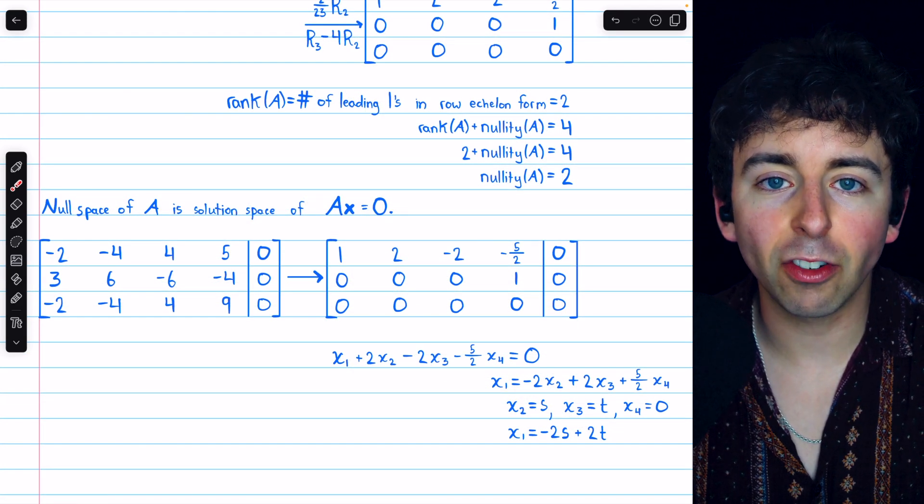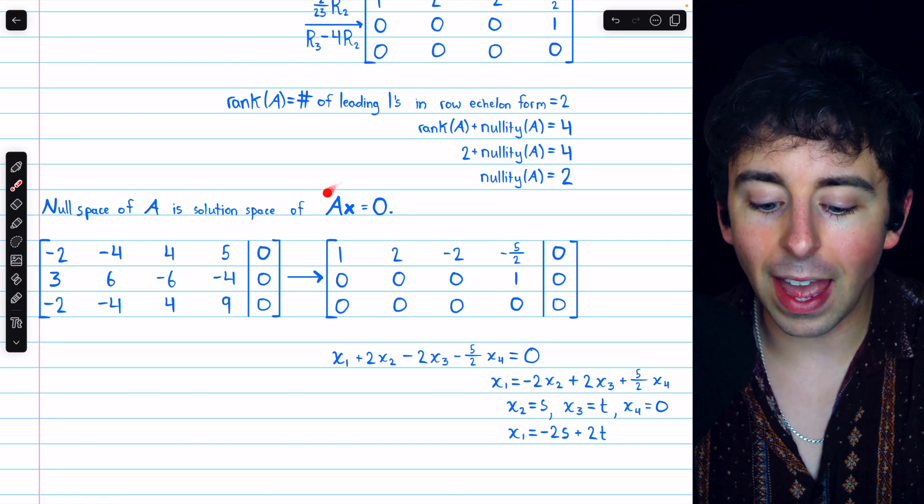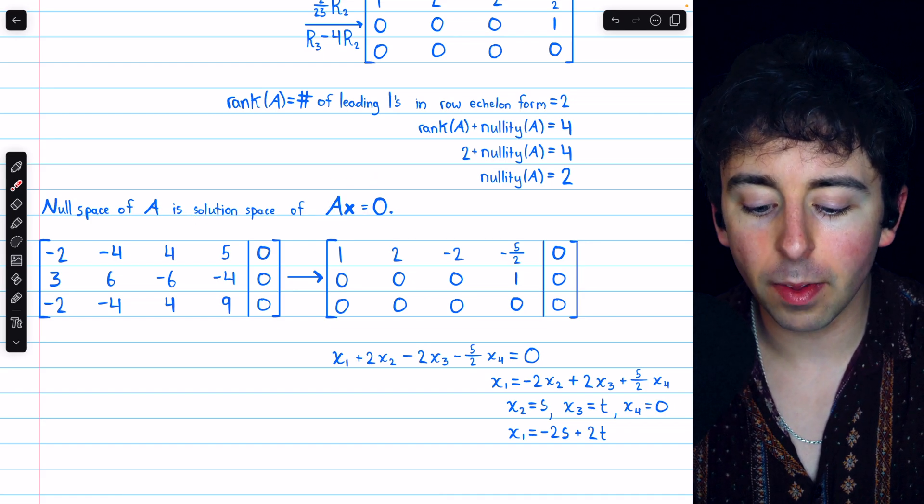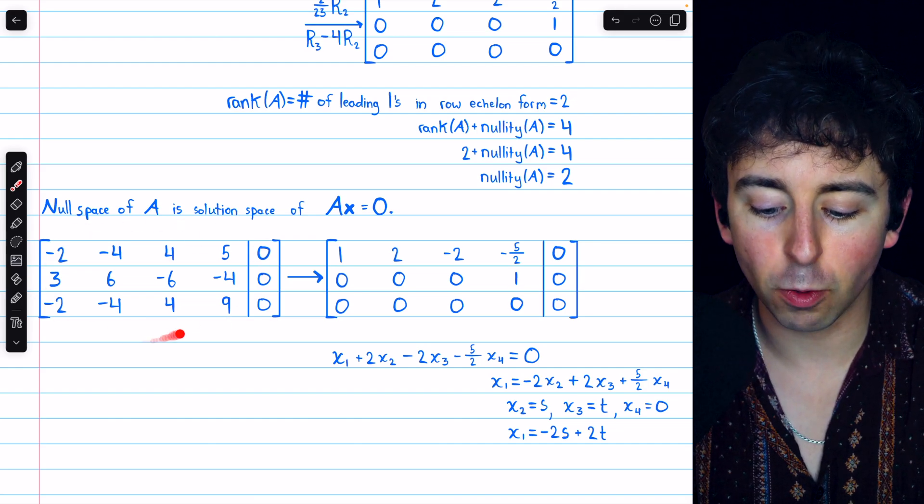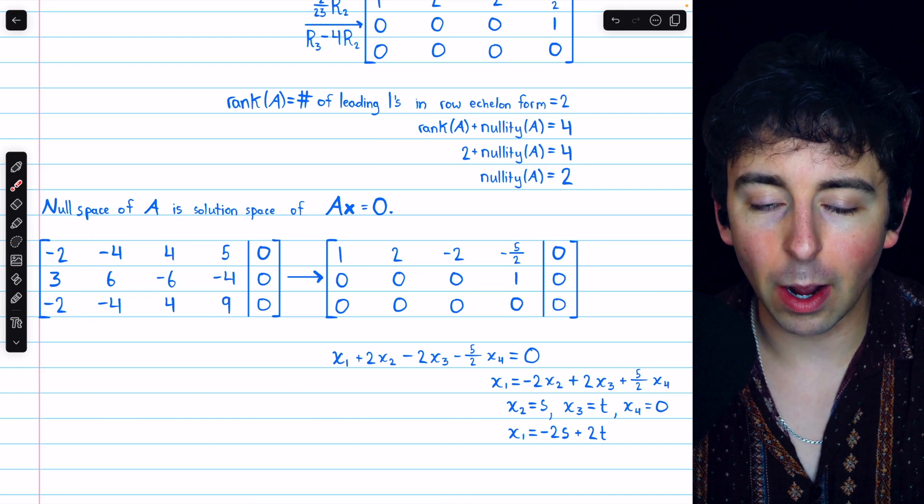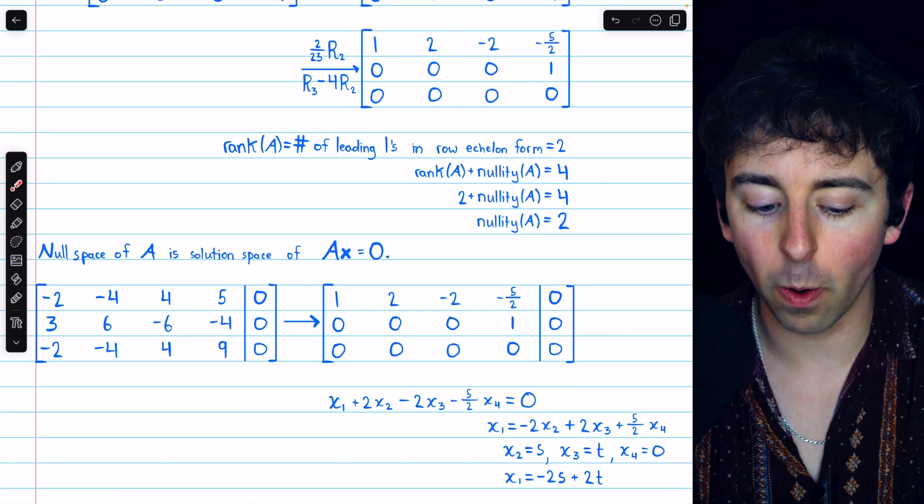We could also find nullity the old-fashioned way, by finding a basis for the solution space of Ax equals 0. Ax equals 0 has this as its augmented matrix, and if we performed Gaussian elimination on that, we would arrive at this same matrix as before, except with this column of zeros.